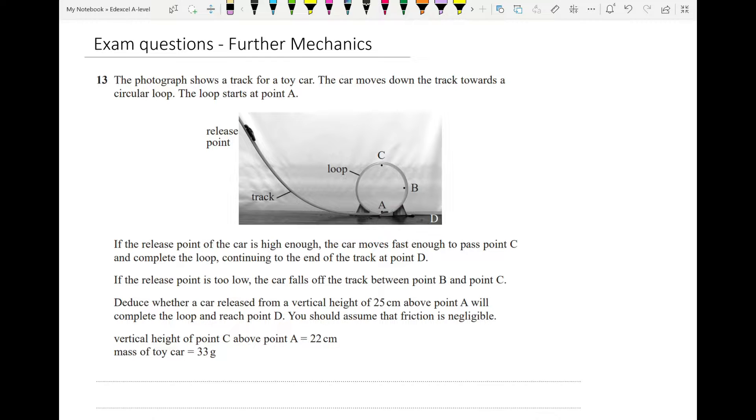Here we have a toy car that's coming down this track, and we need to establish that if it is released from 25 cm above point A, which is up here, is it going to be able to stay on the track and go all the way around from A to C and around to D?